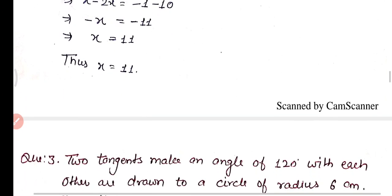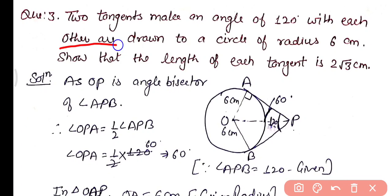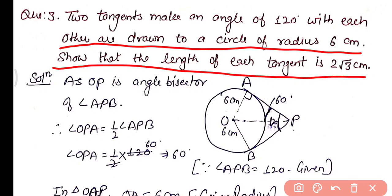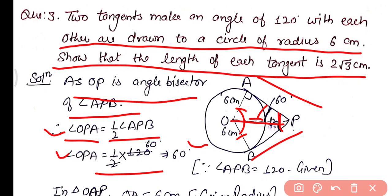Question three: two tangents making an angle of 120 degrees with each other are drawn to a circle of radius 6 centimeters. Prove that the length of each tangent is 20√3 centimeters. Since OP is the angle bisector of angle APB, angle OPA = half of 120 degrees = 60 degrees.